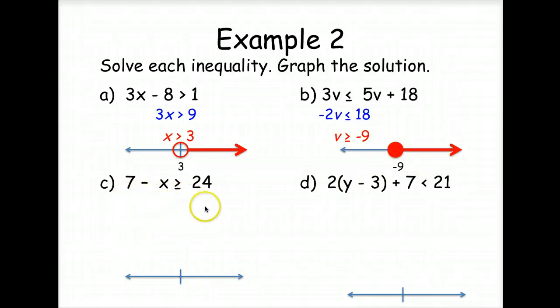How about 7 minus x is greater than or equal to 24? Of course, we're going to start by subtracting 7 from both sides. But we need to solve for x, not a negative x. So we're going to divide both sides by a negative 1. Because we're dividing by a negative number, we flip our sign. So right here we'll put a negative 17, and it's or equal to, and less than. So closed circle, less than.